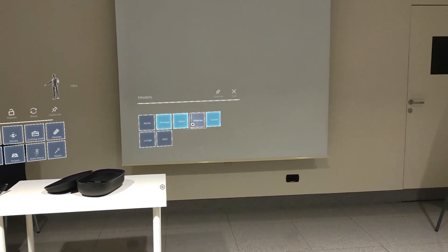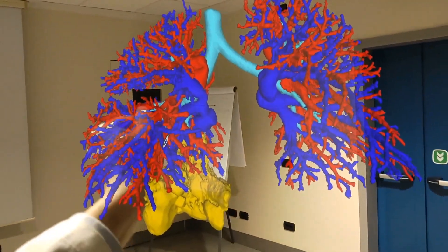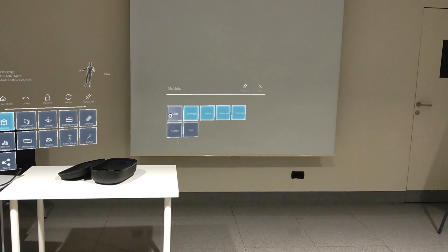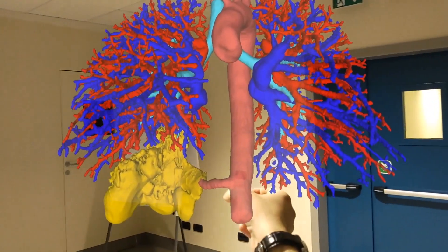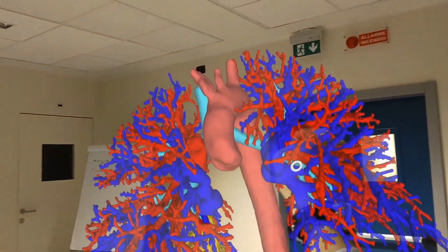We then visualize the venous system, disclosing the standard anatomy of the right lower pulmonary vein, and subsequently we reintroduce the pulmonary artery system and then the aortic feeding artery and the whole aorta to have a global view of the surgical field.